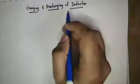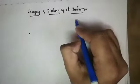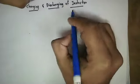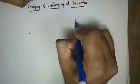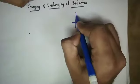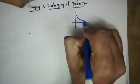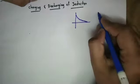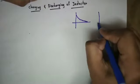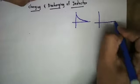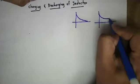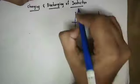First of all, we will show discharging. We will show 4 graphs. This is standard discharging. Next, this is normal discharging.